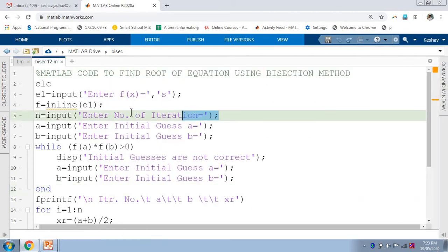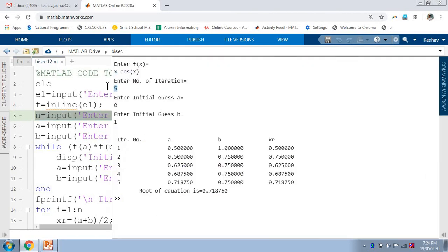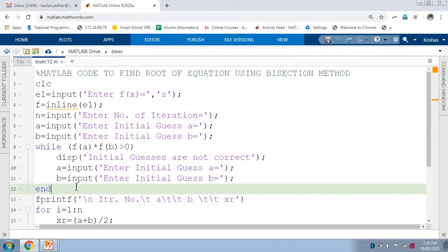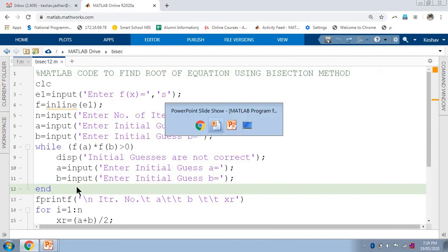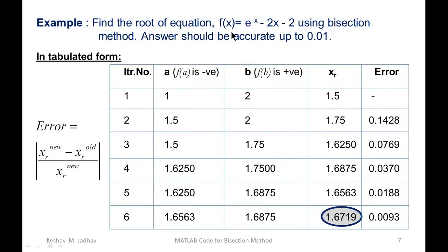Here the stopping criteria is the number of iterations — the iterations stop after the given number. But in some examples, the stopping criteria is accuracy instead. For example, we may need to find the root using the bisection method where the answer should be accurate up to 0.01. So here the stopping criteria is not the number of iterations.